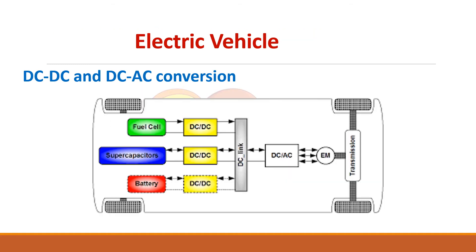The next application is an electric vehicle. The main source of energy in an electric vehicle is the battery. If you have a battery alone, you need a DC-DC converter. For example, your battery may be at 12 volts but your DC link may be at 48 volts, so to step up from 12 to 48 volts you need a step-up converter.